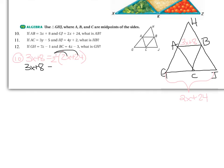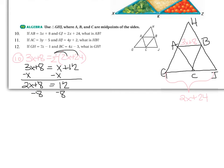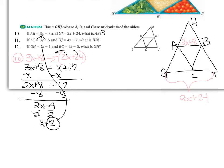3X + 8 = X + 12. Don't just set the small piece equal to the longer piece — that doesn't make sense. Subtract 8: 2X = 4. Divide by 2: X = 2. To find the length of AB, plug back in: 3(2) + 8 = 6 + 8 = 14.